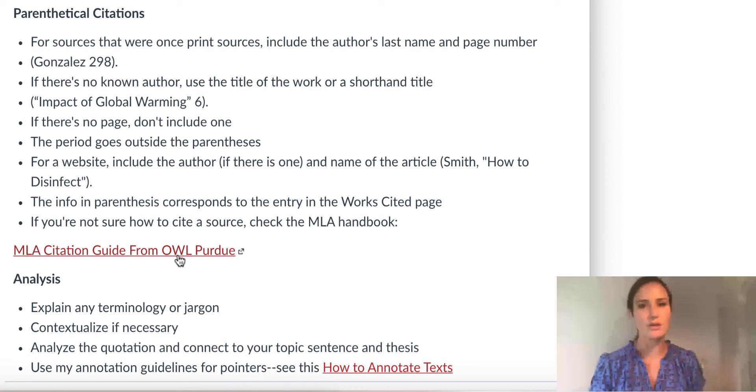If there is no page number, don't use the page number. Don't include a paragraph. Just use the author's last name, the name of a shorthand version of the article. And if there is no last name, just use a shorthand version of the article. If there is no page number, don't use the page number.